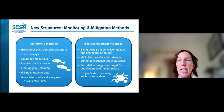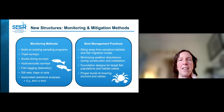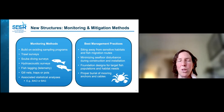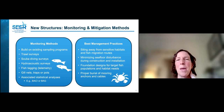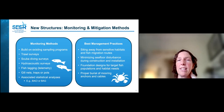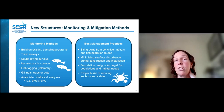A variety of monitoring concepts have been applied in Europe and are also being used in the United States. Monitoring methods need to build on existing sampling programs and can include trawl surveys, SCUBA diving surveys, hydroacoustic surveys, fish tagging or telemetry, gill nets, traps, or pots for sampling lobster, with associated statistical analyses. Best management practices include siting away from sensitive habitats such as protected areas, away from known fish migration routes, minimizing seafloor disturbance during construction, and designing foundations for target fish populations. Proper burial needs to be considered for mooring anchors and cables at floating wind farms.